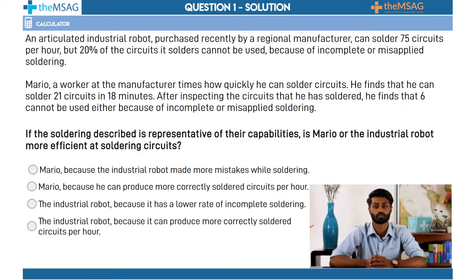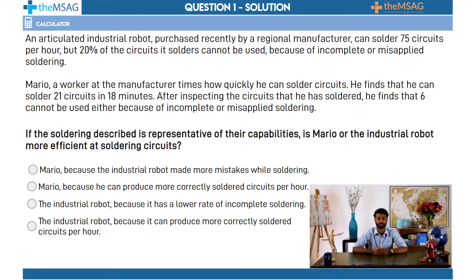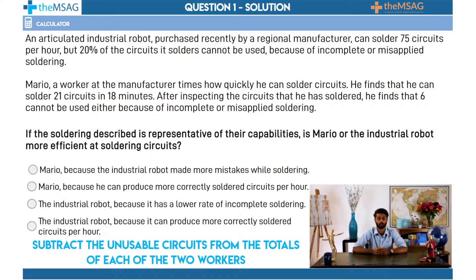The first obstacle you must overcome is the language of these questions. How exactly does the UCAT expect us to calculate efficiency? Simply put, you must calculate who, in this example, has the faster rate of creating usable soldered circuits. To do this you must subtract the mistakes — the duds, the failures. We would subtract the unusable circuits from the totals of each of the two workers.